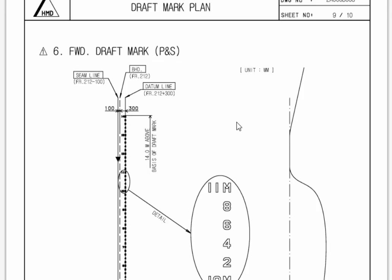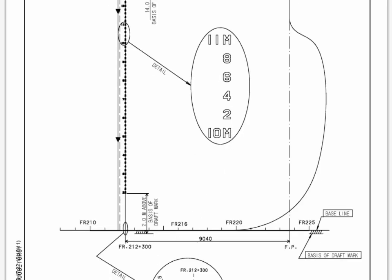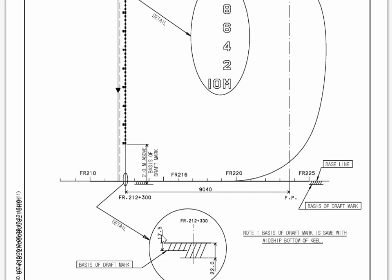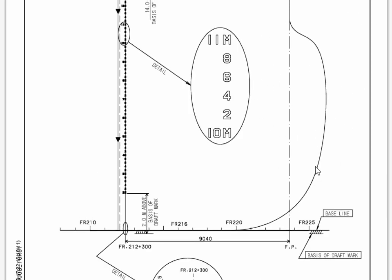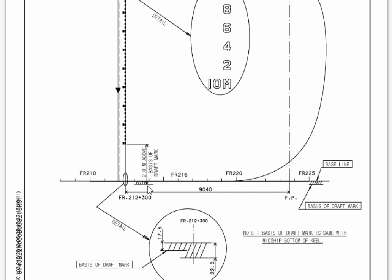This is the forward draft mark. In the middle area it is thicker, and further forward they also increase — you see here 2.2 cm, because this area near the bulb is always hit by the waves, so that is why they make it much stronger. But same thing — the base of the draft mark is the bottom of the keel plate. You see here the distance between the forward perpendicular and the draft mark: 9,040 mm, which makes 9 meters 4 cm. In these drawings, don't forget, dimensions are always in millimeters.